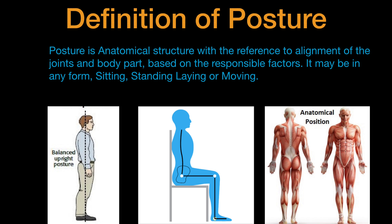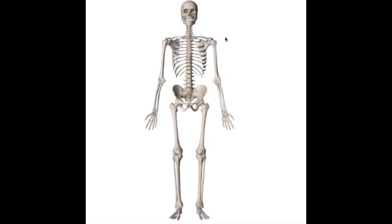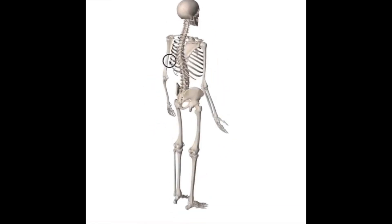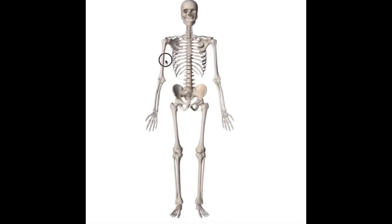The posture is anatomical structure with reference to alignment of the body joints and body parts — it means posture is based on anatomical structure. The anatomical structure is given as a reference point by anatomy and can be understood by the direction of the body. The front part is called anterior, the rear part is called posterior, the side is called lateral, and the middle part — like the sternum — is called medial.